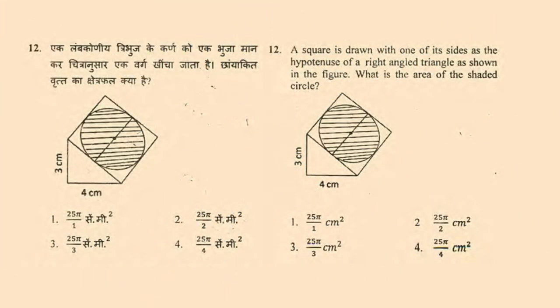Problem number 12: A square is drawn with one of its sides as the hypotenuse of a right-angled triangle, as shown in the figure. What is the area of the shaded circle? The right-angled triangle has perpendicular 3 cm and base 4 cm. Options: 25π/1 cm², 25π/2 cm², 25π/3 cm², 25π/4 cm².